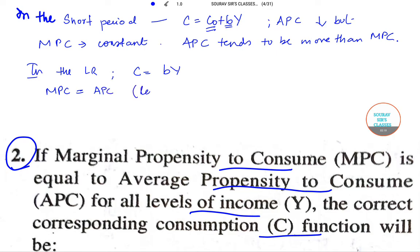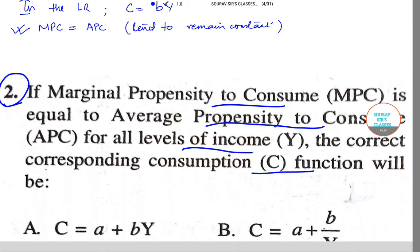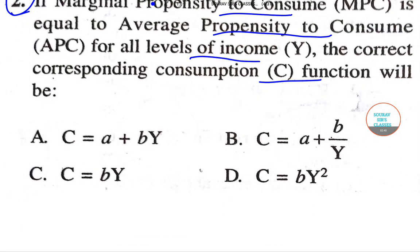So in the long run, both the average propensity to consume and marginal propensity to consume tend to remain constant, and average propensity to consume tends to be equal to marginal propensity to consume as given. Therefore the correct consumption function form to pick here is option number C, which is C = bY.